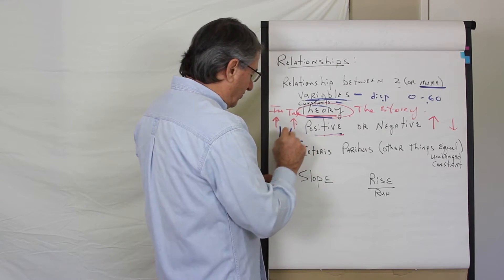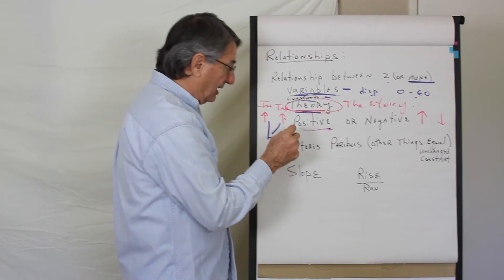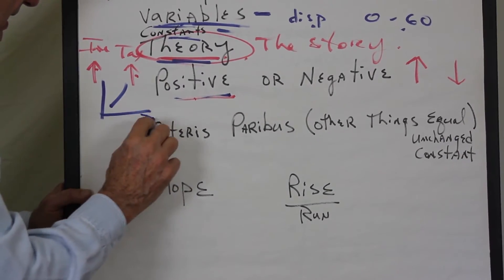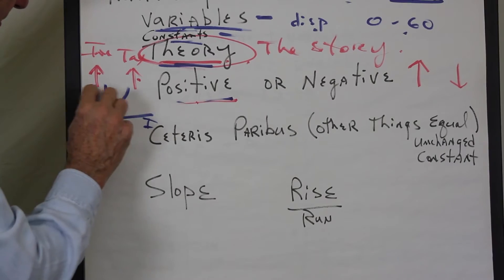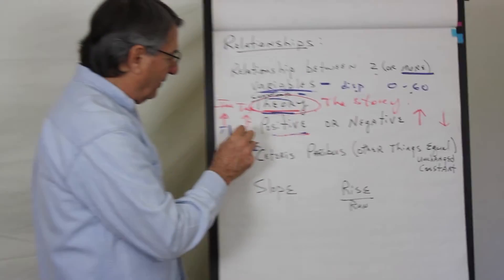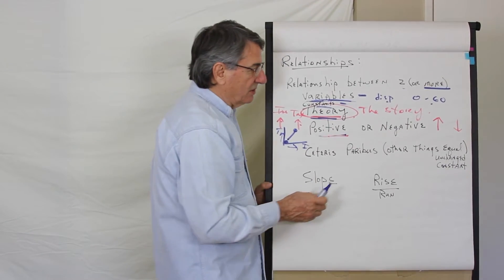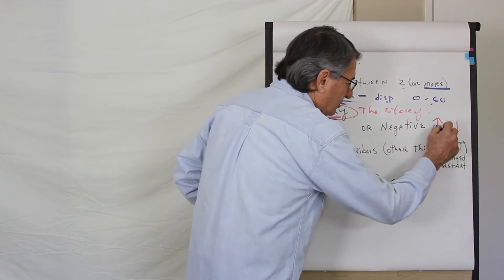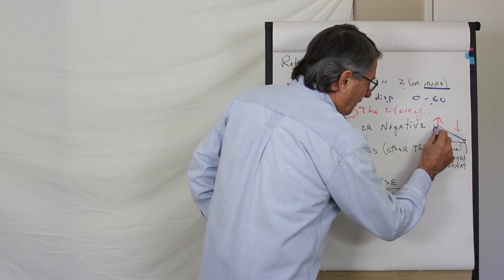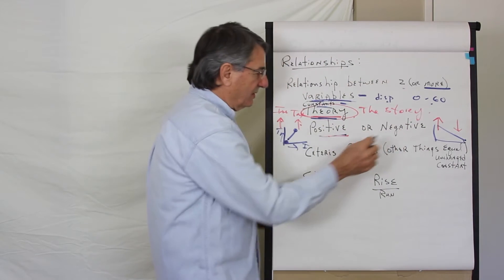Positive relationships graph upward from left to right. So if this is my income and this is my taxes — if I have very little income, I pay very little taxes; if my income goes up, I pay more taxes. That's a positive relationship. Negative relationships graph downward from left to right.